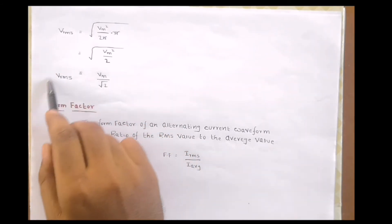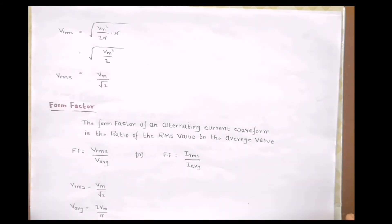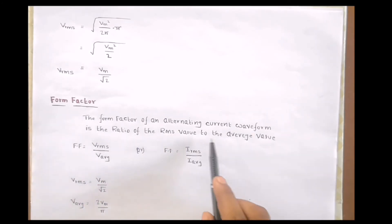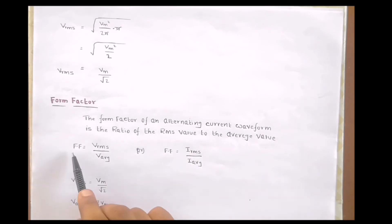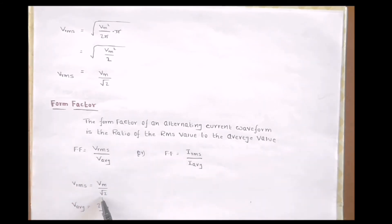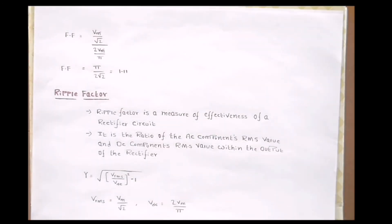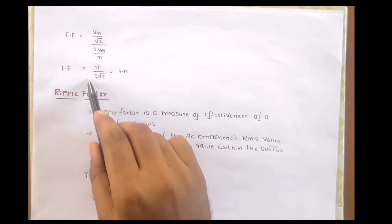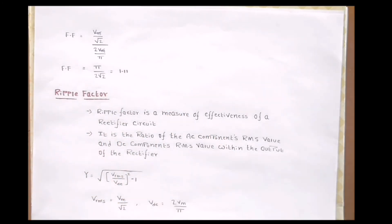Now let us obtain the value of form factor. The form factor of an alternating current waveform is the ratio of RMS value to the average value, so form factor = Vrms / Vaverage, or equivalently Irms / Iaverage. Substituting Vrms = Vm/√2 and Vaverage = 2Vm/π, the Vm's cancel, leaving π/(2√2) = 1.11. Therefore the form factor of a full wave rectifier is 1.11.